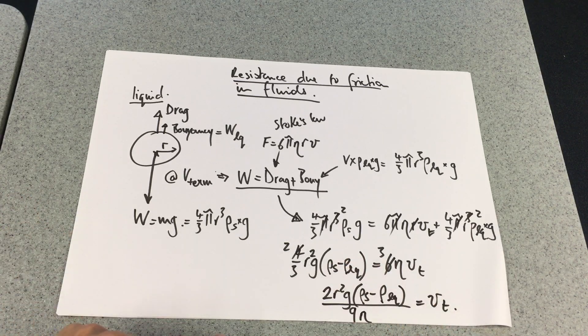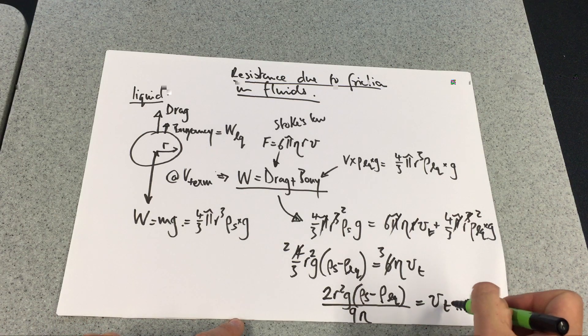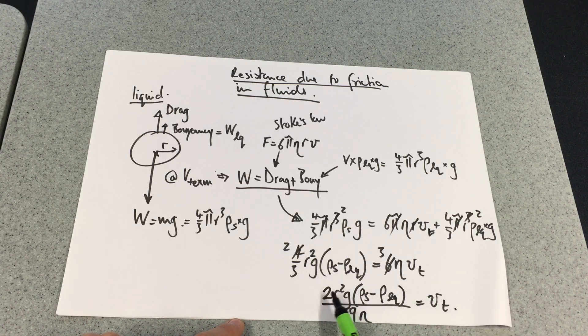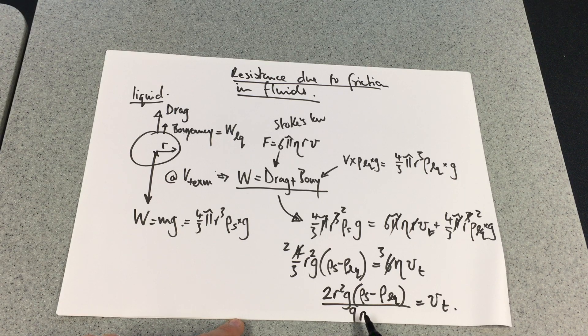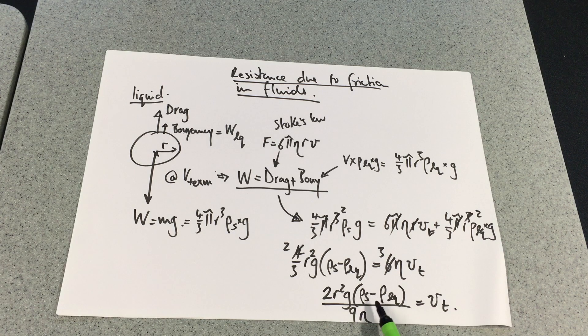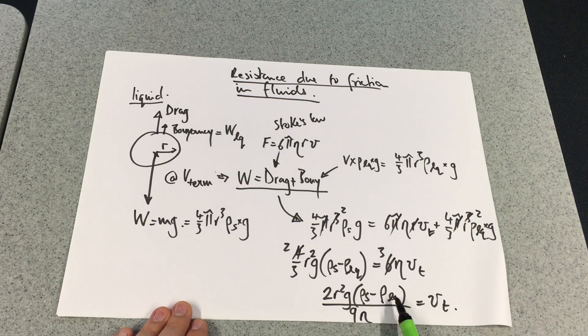So why is that useful? I've now got all of these are constants. g is constant, 2, 9, ν is the viscosity of the liquid, which is constant. We're using glycerol. The steel ball density is very much greater than the liquid, so this sort of just turns into the density of the steel ball.